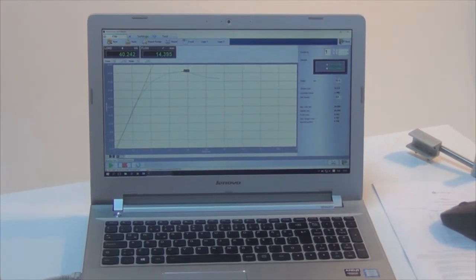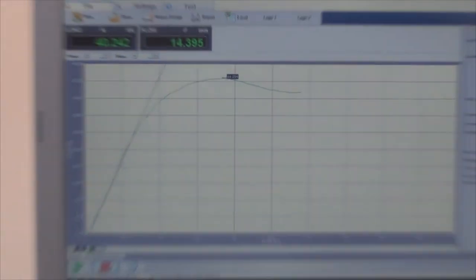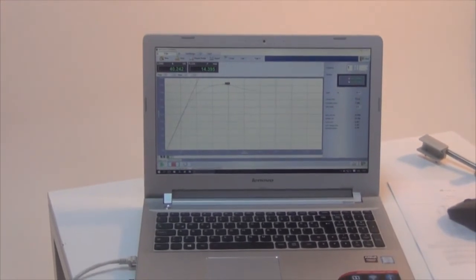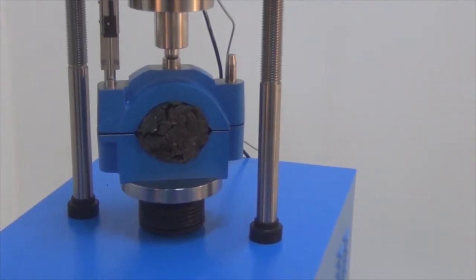Now we have ended the test and the peak point of the Marshall has been recorded automatically in the software. The software has also stopped the device. As you can see, the specimen is damaged and the test is finished.